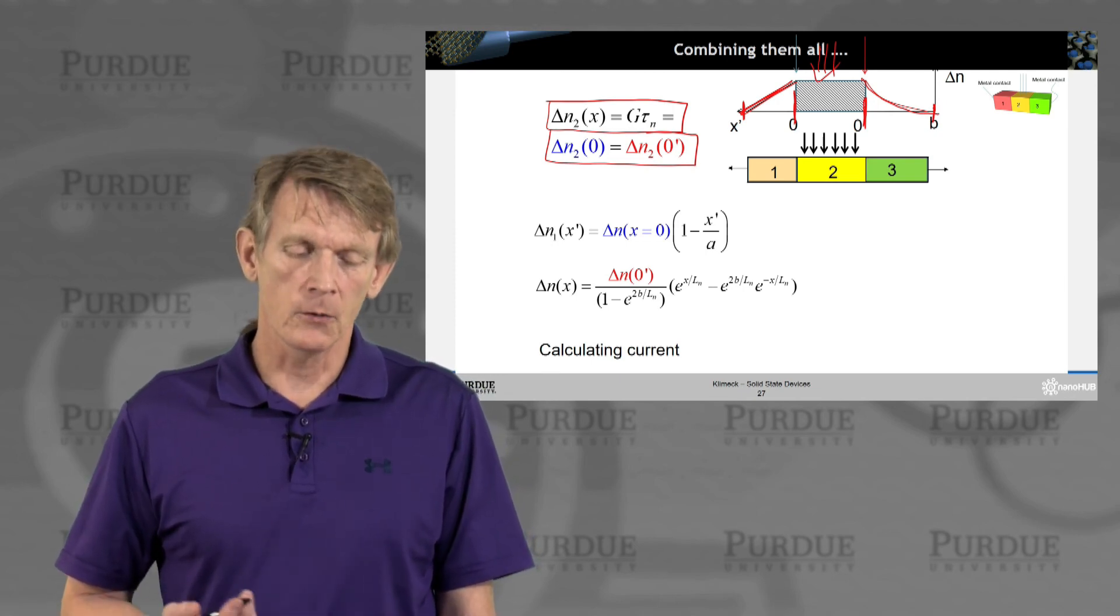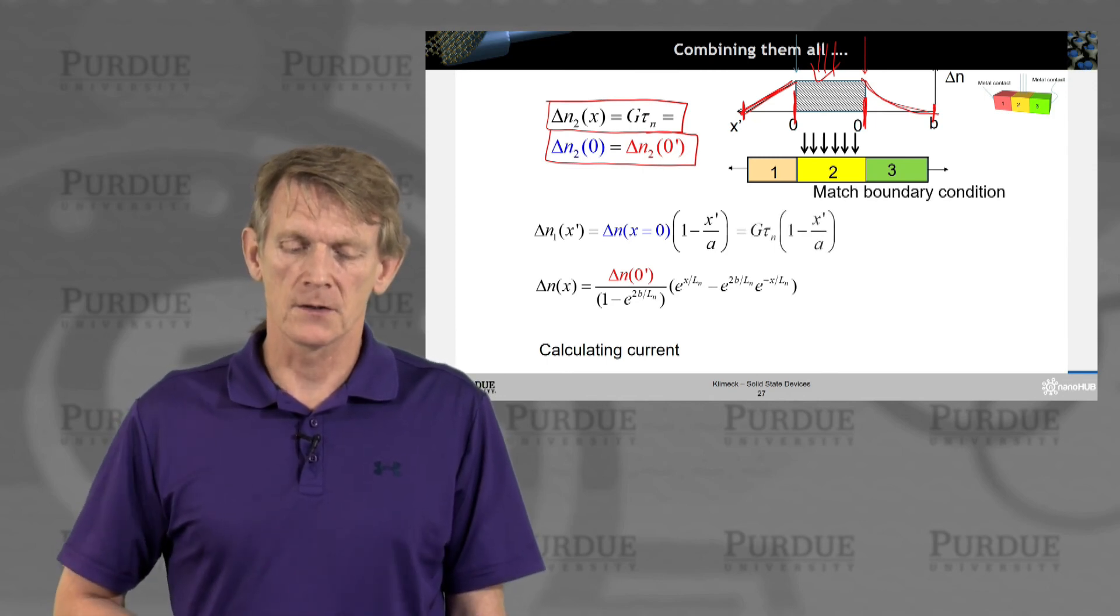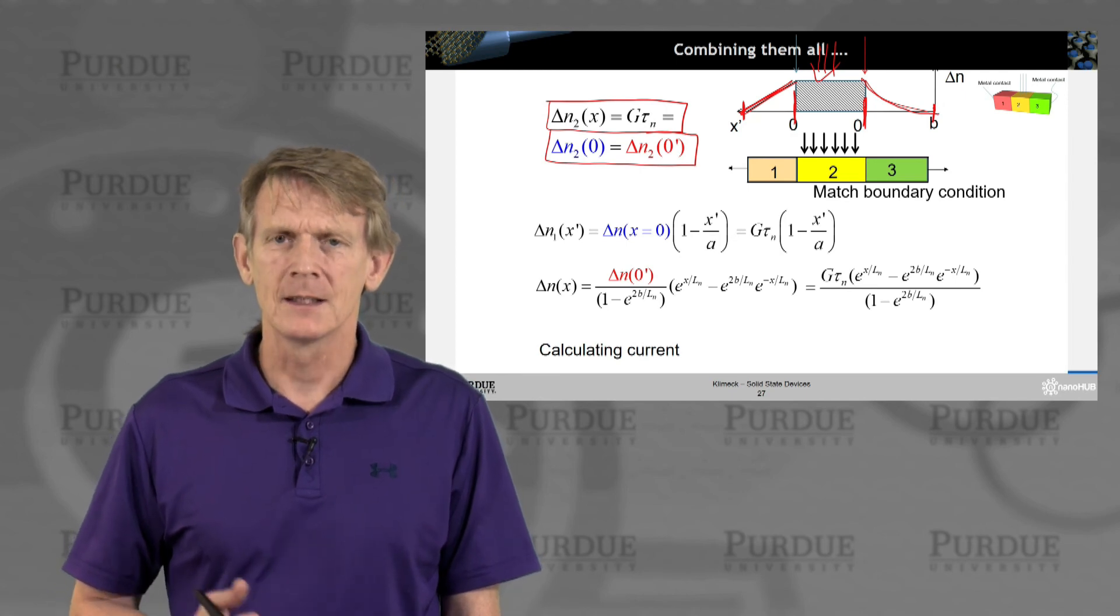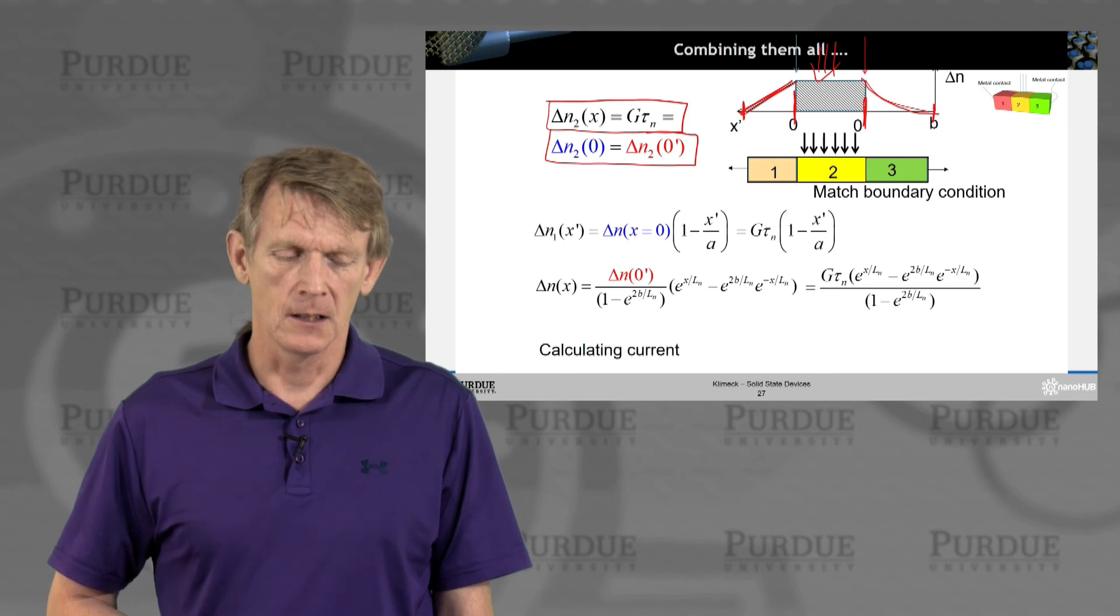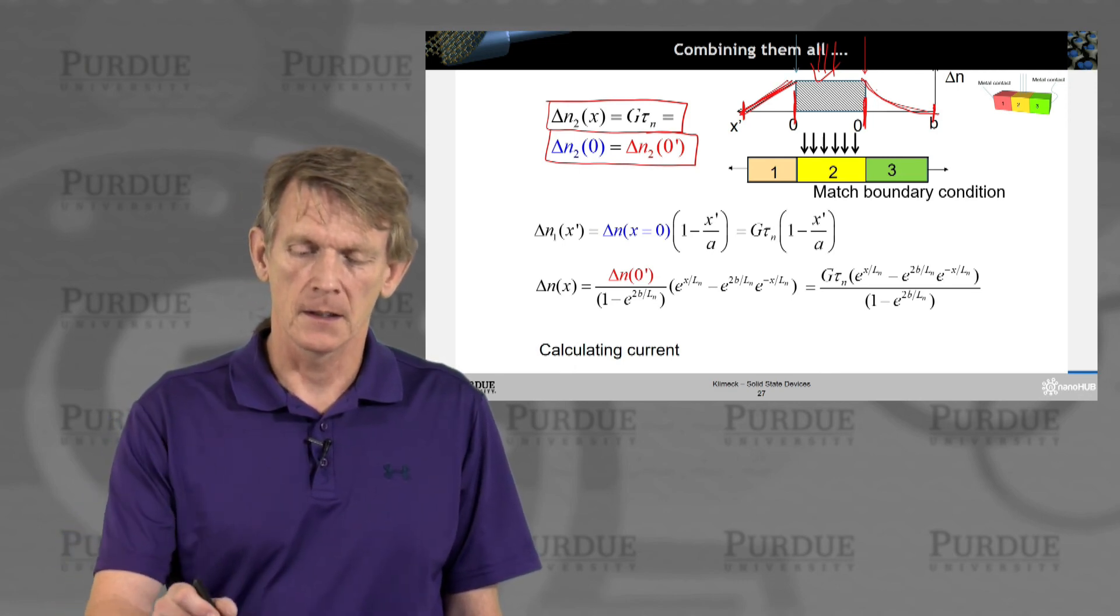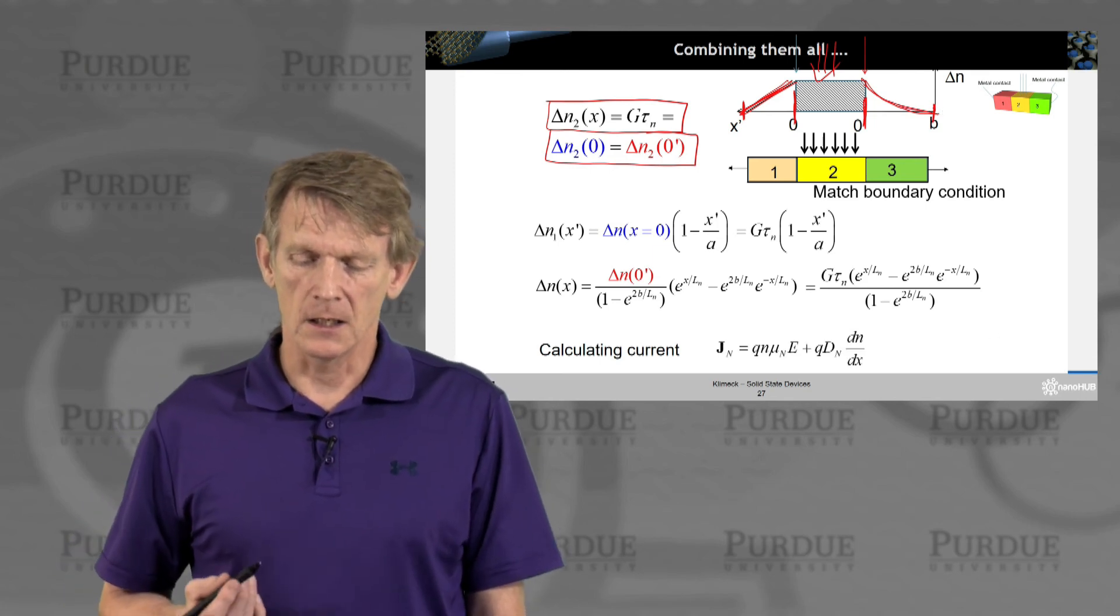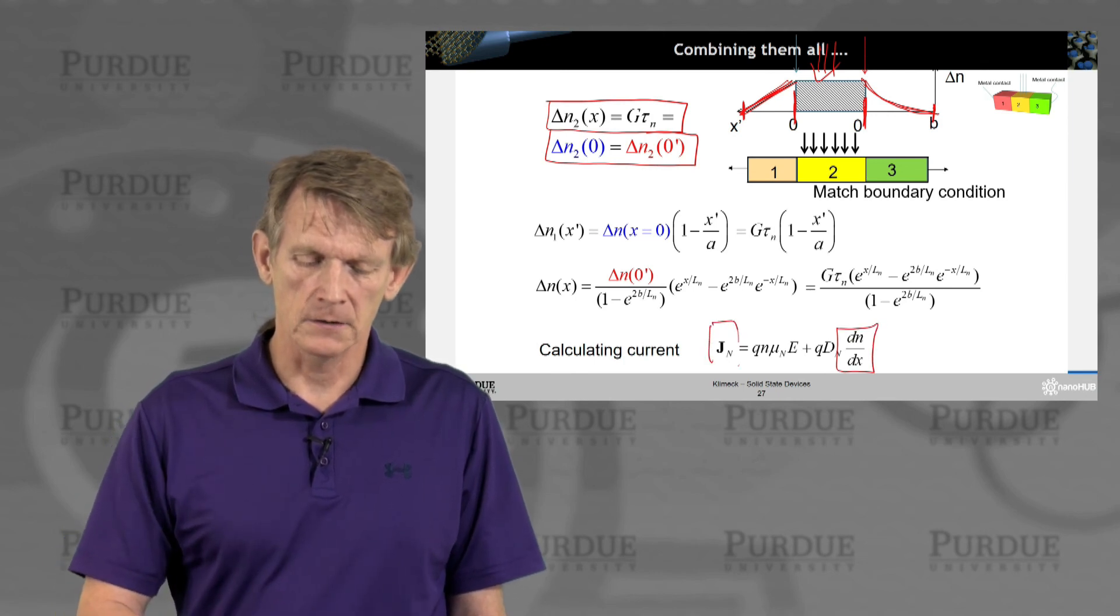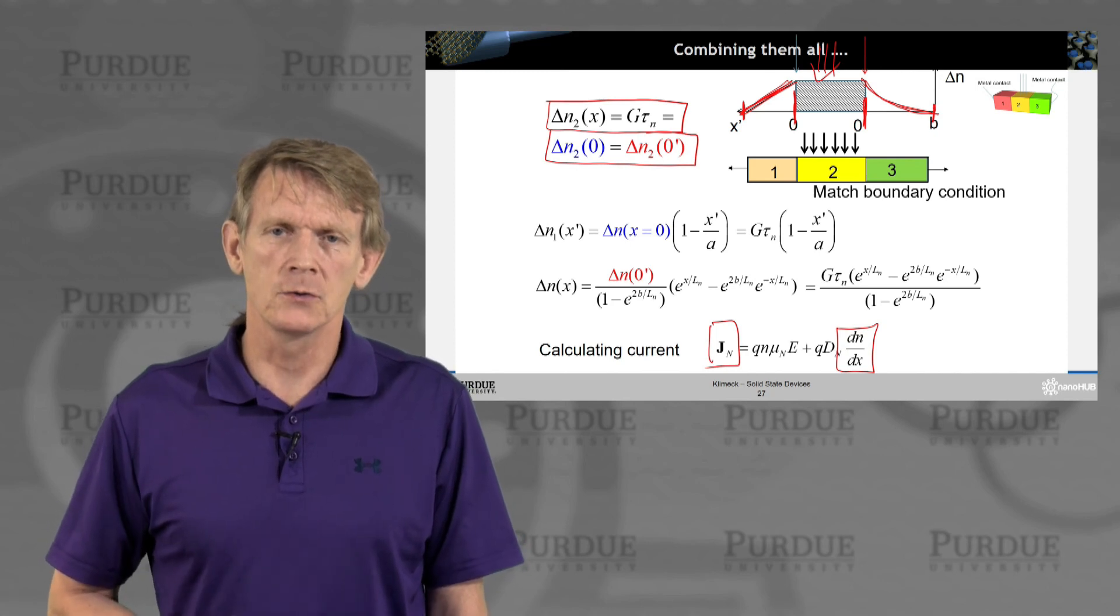Now we have these boundary conditions. We can put them into the three coordinate systems and solve for it. There's really no black magic anymore. You have an expression for the carrier distribution in here and in here. And when you have that, you can now calculate dn/dx. And you can calculate a current in the system. So this is not very hard to do.